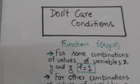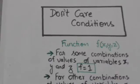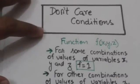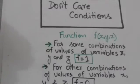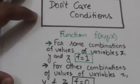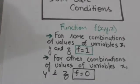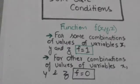Hello friends, welcome back. In this tutorial we will study about don't care conditions. Suppose there is a function f of three binary variables x, y, and z. For some combinations of values of variables x, y, and z, function f would be equal to one, and for other combinations, function f would be equal to zero.